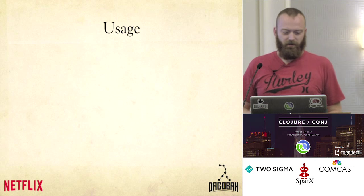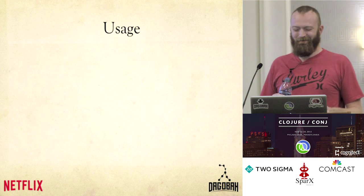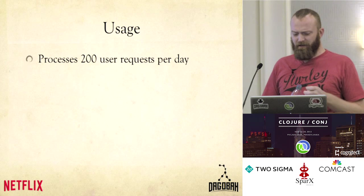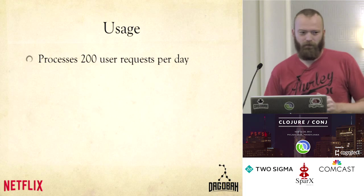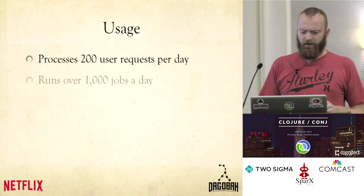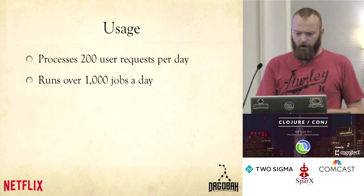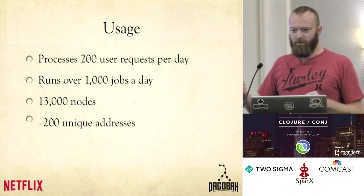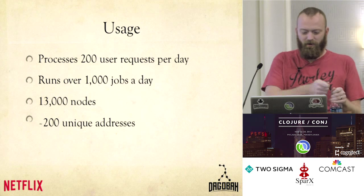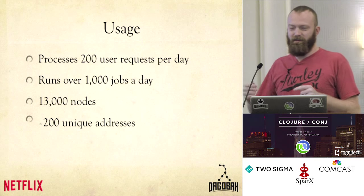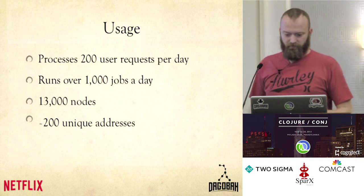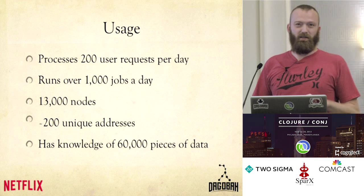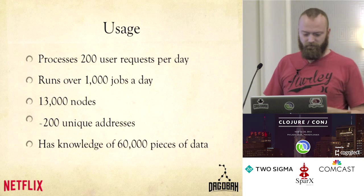We do actually use this in production at Netflix — not for all of Netflix yet, but for a lot of things. Right now we're processing about 200 user requests every day. That sounds small, but this is actually 200 data pipelines running every day, and these data pipelines might span hours or days. In the end it ends up running about 1,000 jobs every day. We have 13,000 node definitions with about 200 unique addresses in the system — people iterate a lot. All my different copies of a node while I was trying stuff out can share data with the existing production system. As a result, right now we have about 60,000 pieces of data that it knows about in the system. We've been running it maybe six months at this rate, so it's accreting very quickly, but it seems to be holding up.